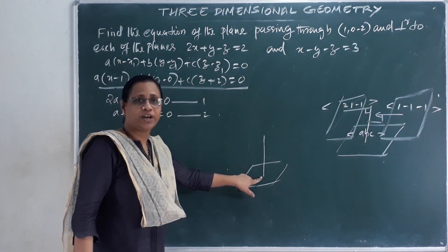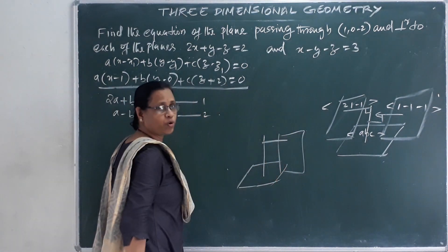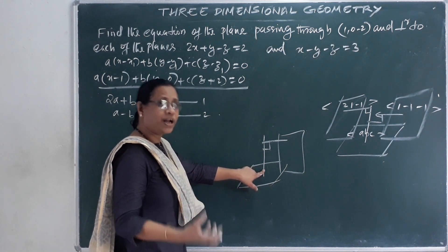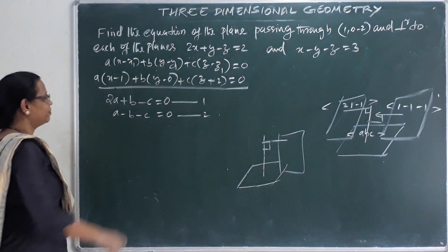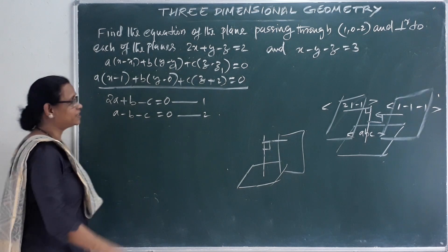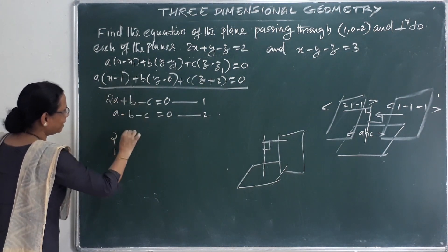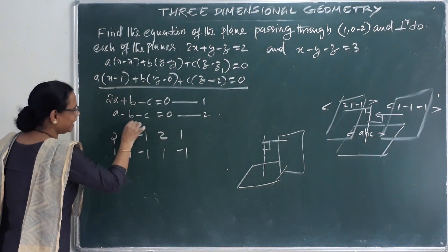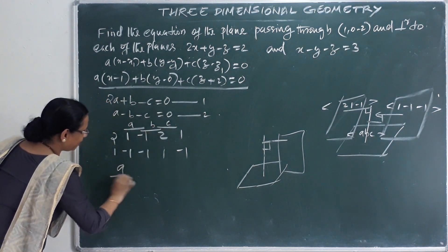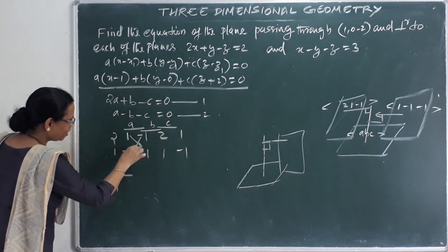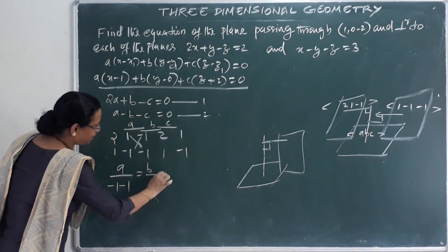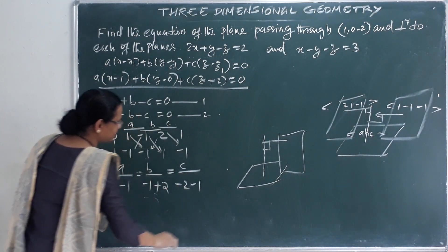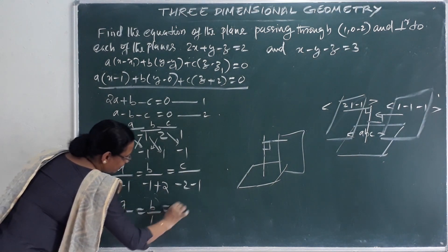Solving these two equations using the cross-multiply method: coefficients are 2, 1, -1 and 1, -1, -1. Computing: A by (1×(-1) minus (-1)×(-1)) equals B by ((-1)×1 minus 2×(-1)) equals C by (2×(-1) minus 1×1). This gives A by (-2) equals B by (1) equals C by (-3).